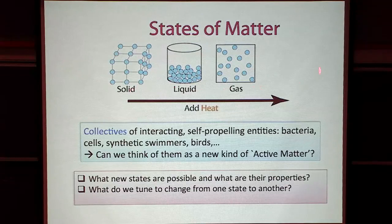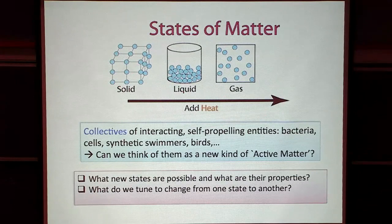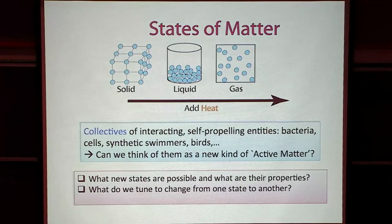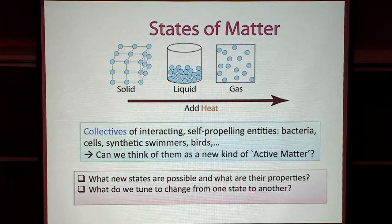These phases arise because of interactions among the various atoms, and we can tune or change from one phase to another by changing the temperature. Now suppose we have instead a collection of objects, units that are self-propelled — such as bacteria, cells, some synthetic swimmers, birds, fish, and so on. Because they do something together collectively due to their interactions, can we think of this system as a new kind of active matter?